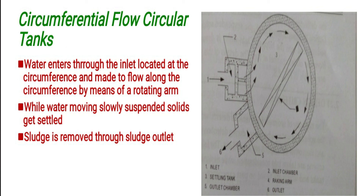Sludge is removed through the sludge outlet. The rotating arm will act as a raking arm, which moves sludge from the circumference to the outlet.